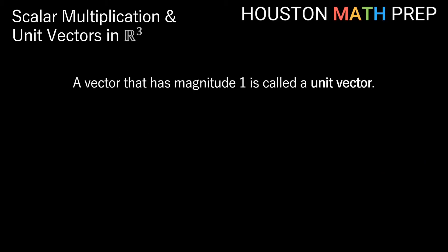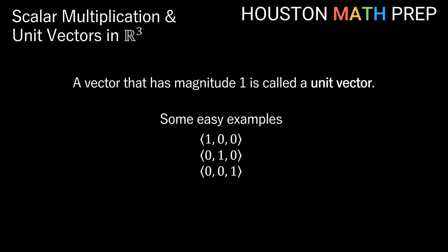Moving on to unit vectors. A unit vector is simply a name we give to any vector that is 1 unit long — its magnitude is equal to 1. Some easy examples: the vector 1, 0, 0 points 1 unit in the positive x direction only. The vector 0, 1, 0 is 1 unit long in the positive y direction. And 0, 0, 1 points 1 unit in the z direction.